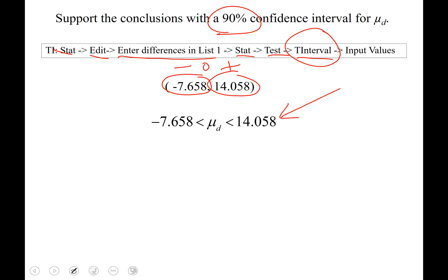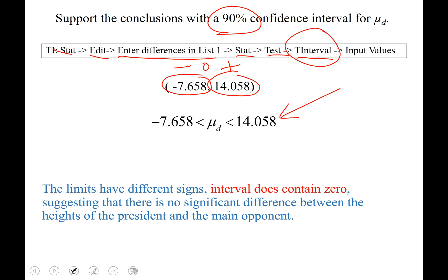And the limits have different signs. Like I said, one negative, one positive. That means that the interval does contain zero. Suggesting that there is no difference between the heights of presidents and the main opponent.